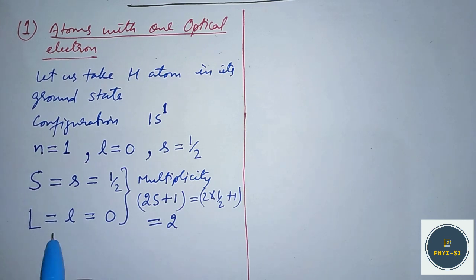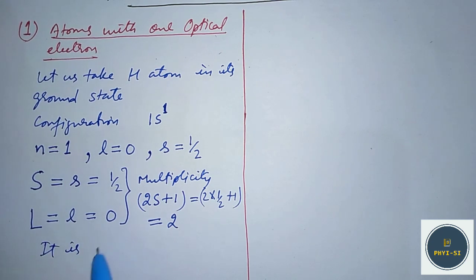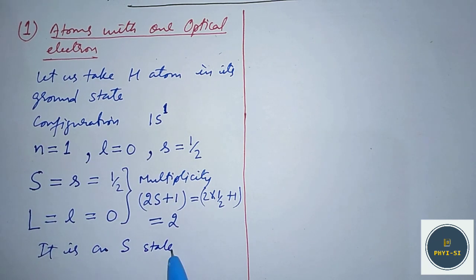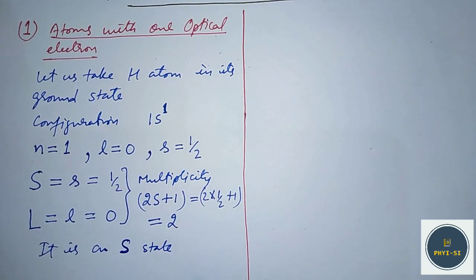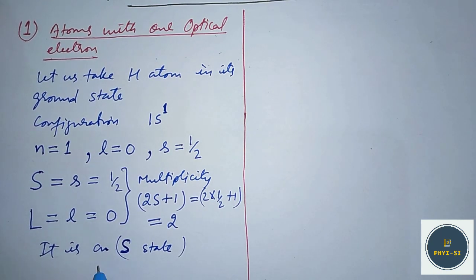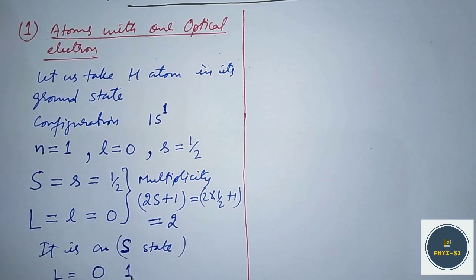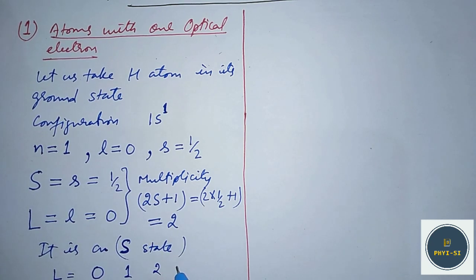This is an S state. We write it as an S state because capital L is zero. The naming convention is: if capital L is zero, the state is S; if capital L is 1, it is a P state; if capital L is 2, it is a D state; if capital L is 3, it is an F state.